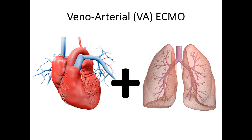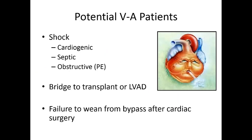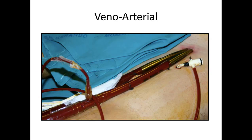Veno-arterial ECMO patients are the ones we will be bringing to the hospital from the field, because these patients need support for both the heart and the lungs. They're usually undergoing cardiogenic shock, septic shock, or obstructive shock due to STEMI or PE. Sometimes this also happens in the hospital with patients unable to wean from bypass after surgery. One interesting thing to note: because the cannulas are so large going into the groin, they can sometimes stop blood flow to the leg. We actually have to reperfuse the leg with an additional line directing blood the opposite way to keep that leg alive.